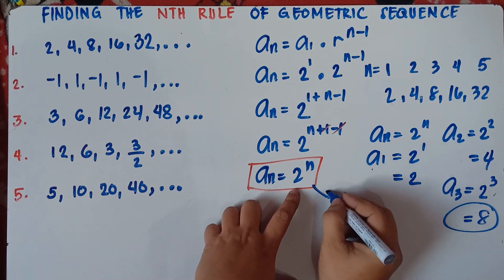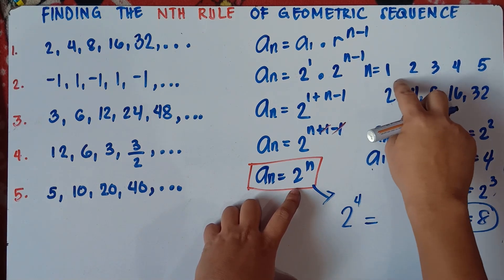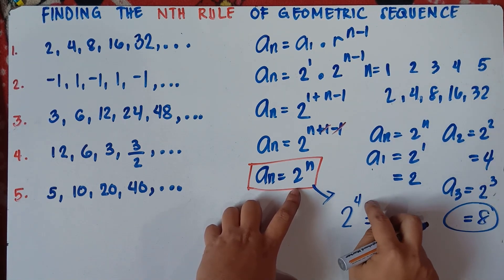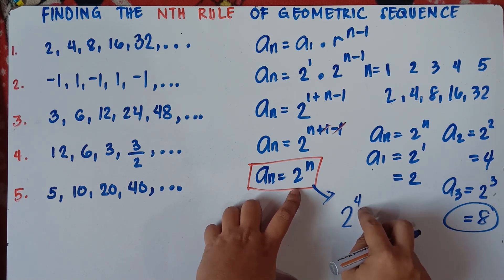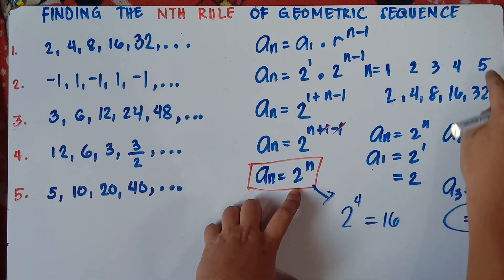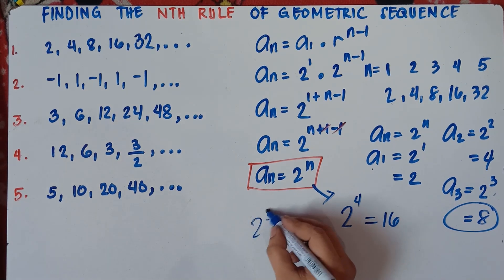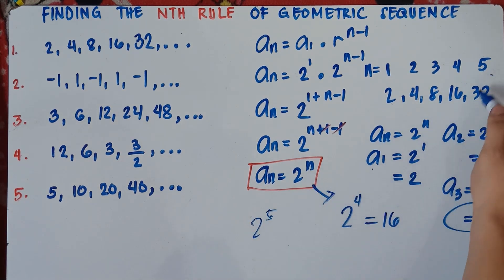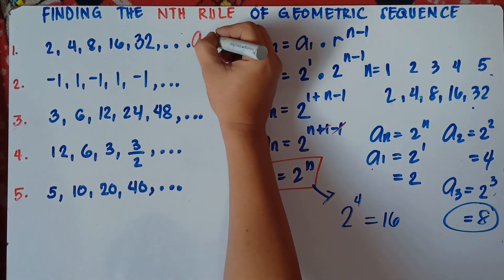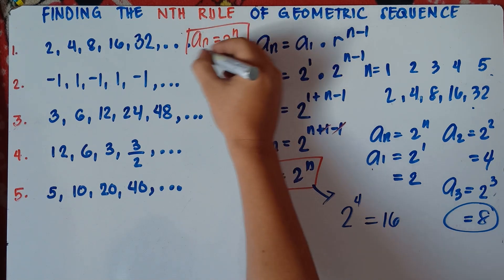If n is 4, from this equation, 2 raised to the power of 4: you multiply 2 by itself 4 times, you will get 16. If n is 5, you multiply 2 by itself 5 times — 2 raised to the power of 5 — you will get 32. Therefore this answer is correct. So a sub n equals 2 raised to the power of n. That would be your first answer class for number 1.